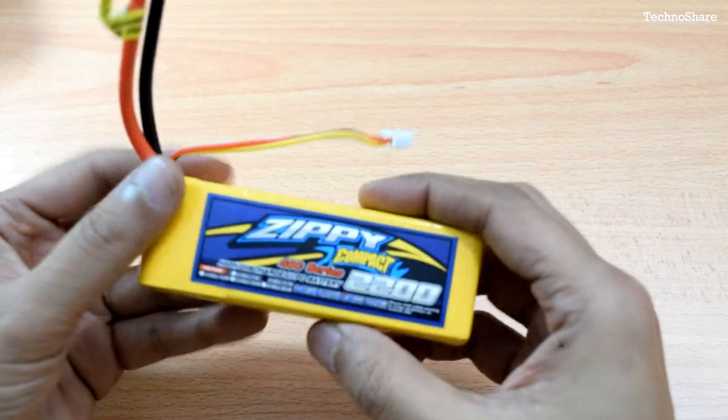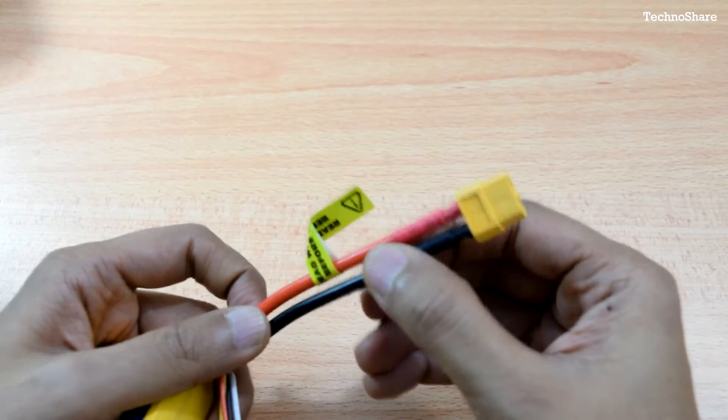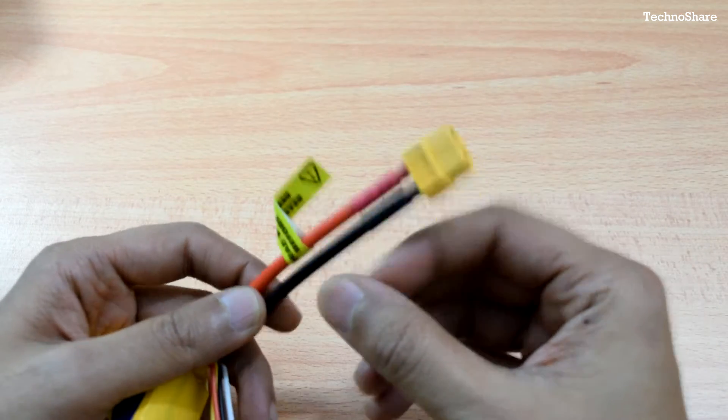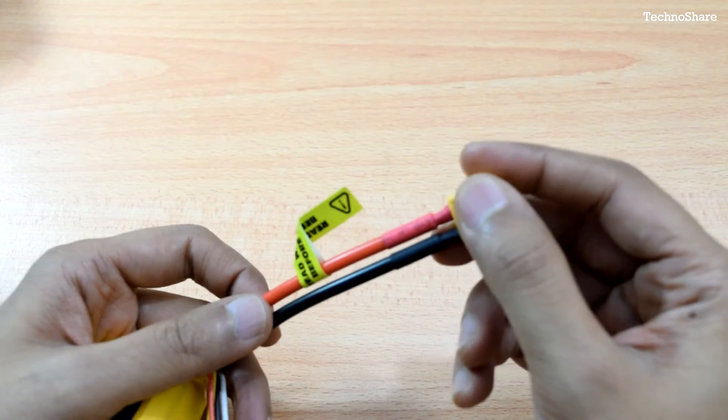And you can see that the gauge of the cable is very thick. This because it carries high amount of current.